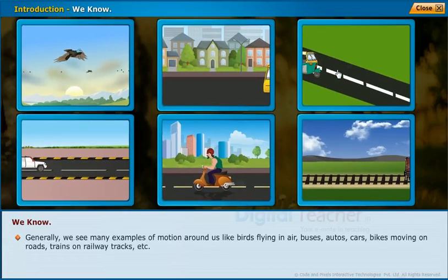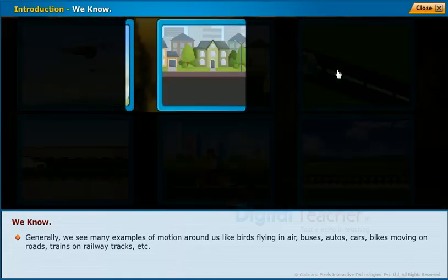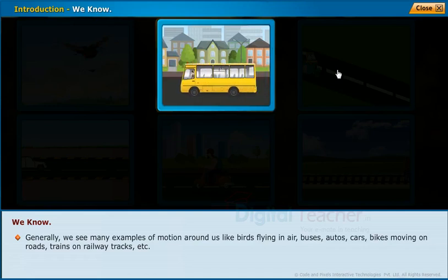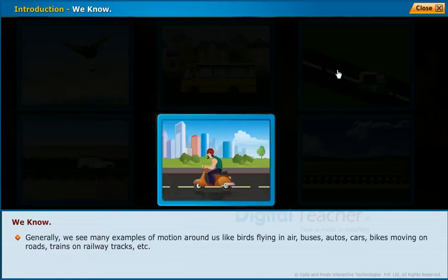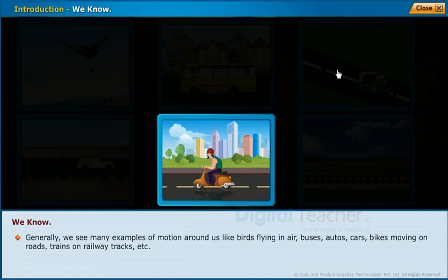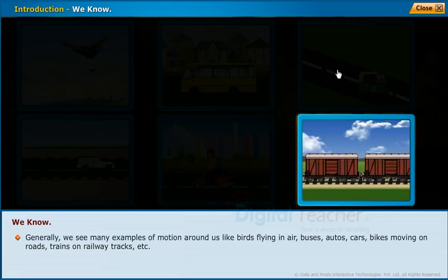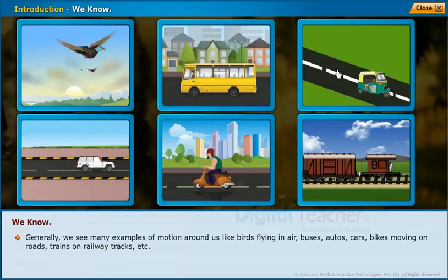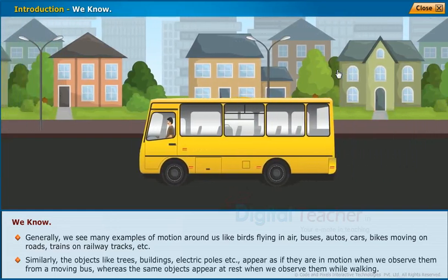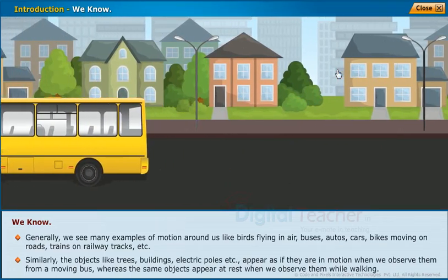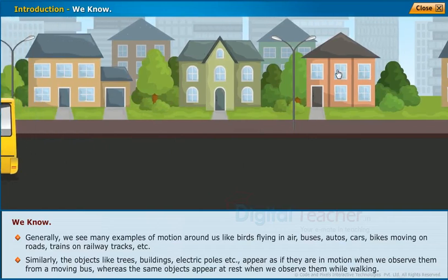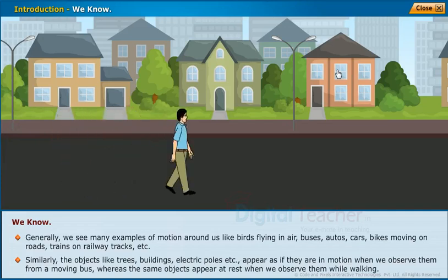Generally, we see many examples of motion around us, like birds flying in air, buses, autos, cars, bikes moving on roads, trains on railway tracks, etc. Similarly, objects like trees, buildings, electric poles appear as if they are in motion when we observe them from our moving bus, whereas the same objects appear at rest when we observe them while walking.